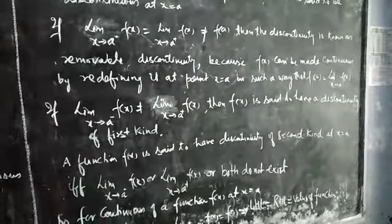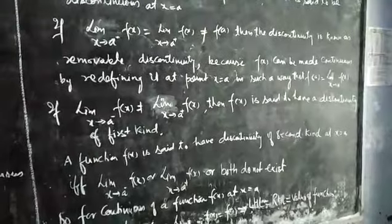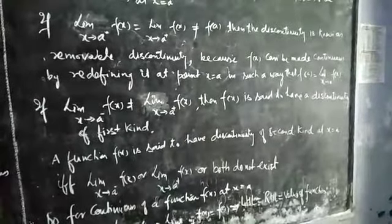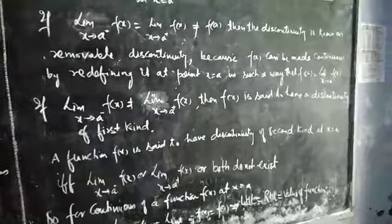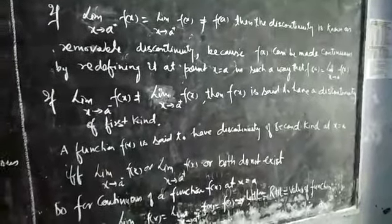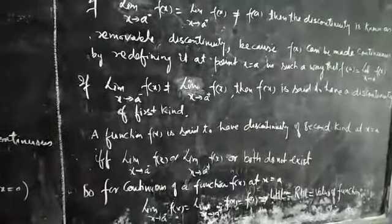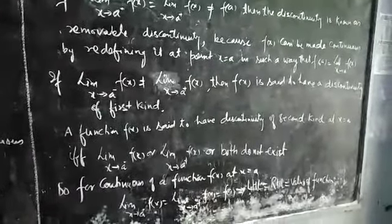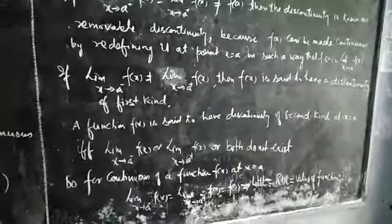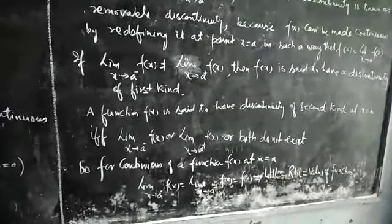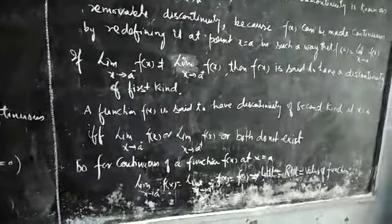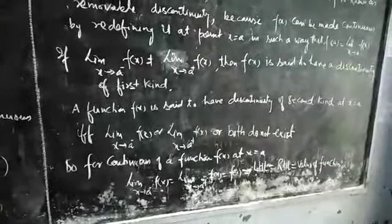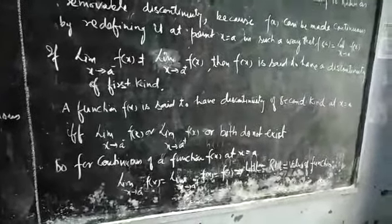If limit x→a⁻ f(x) is not equal to limit x→a⁺ f(x), then f(x) is said to have a discontinuity of the first kind. A function f(x) is said to have discontinuity of the second kind at x equal to a if and only if limit x→a⁻ f(x) or limit x→a⁺ f(x), or both, do not exist.